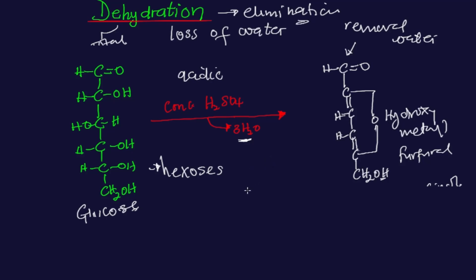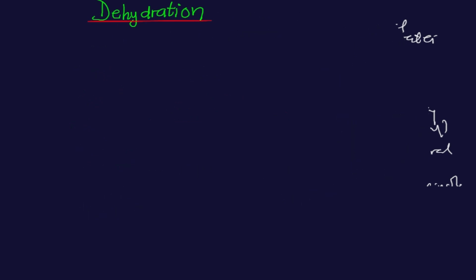It can react with phenolic compounds. I'm going to talk about the dehydration of monosaccharides. Dehydration is basically a type of reaction that monosaccharides undergo to give furfural or furfural derivatives. Now let's move into what dehydration is and the mechanism behind the dehydration reaction.